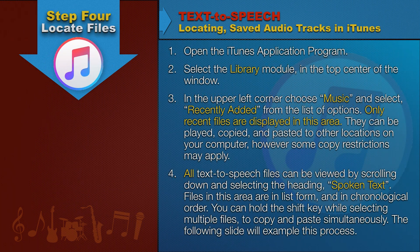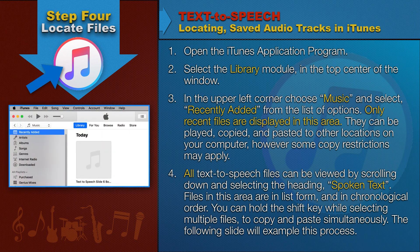Locating Saved Audio Tracks in iTunes. Open the iTunes application program. Select the Library module in the top center of the window. In the upper left corner, choose Music and select Recently Added from the list of options. Only recent files are displayed in this area. They can be played, copied, and pasted to other locations on your computer; however, some copy restrictions may apply.